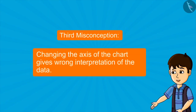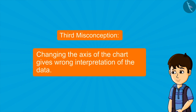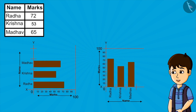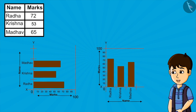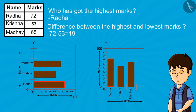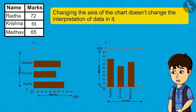Some people also believe that changing the axis of the chart gives wrong interpretation of data. Look at both these charts carefully. We have only changed the coordinate axis, but still we are getting the same information from the data — who has got the highest marks, difference between the highest and lowest marks, etc. So we can say that changing the axis of the chart doesn't change the interpretation of data in it.